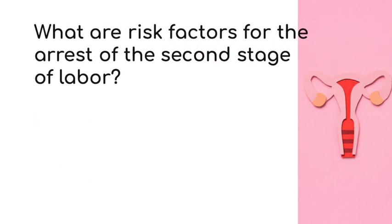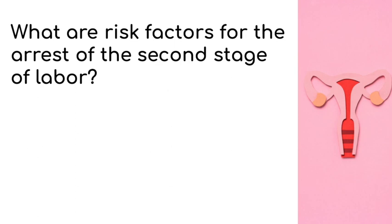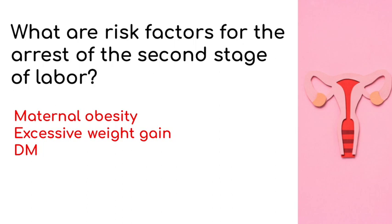What are risk factors for the arrest of the second stage of labor? Maternal obesity, excessive weight gain, and diabetes mellitus. The second stage arrest of labor is a lack of fetal descent after more than four hours of pushing in a primigravida with an epidural, or more than three hours without an epidural. For non-first-time mothers, it's more than three hours with an epidural or more than two hours without.